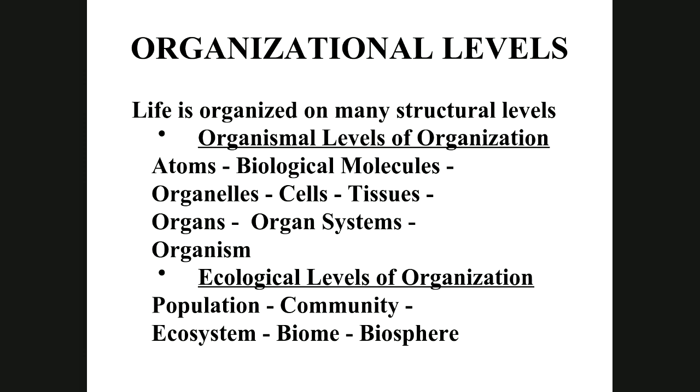Our environment also has levels of organization. A population is a group of like individuals — at school there's a population of humans, but also populations of bacteria, crickets, flies, birds, and trees. All the populations in a given area make up a community. A community like Irving has populations of humans, horses, cats, dogs, crickets, grasshoppers, birds, trees, and grasses. An ecosystem is a community that can recycle its resources.